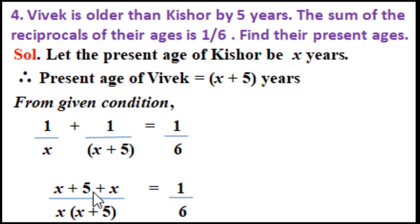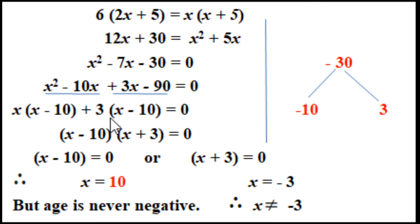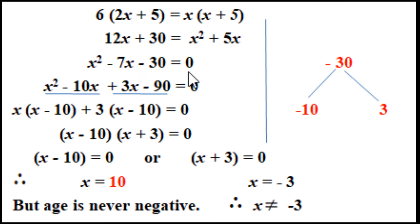By cross multiplying: (x plus 5 plus x) divided by x(x plus 5) equals 1/6, so 6(2x plus 5) equals x(x plus 5). Expanding: 12x plus 30 equals x squared plus 5x. Rearranging: x squared minus 7x minus 30 equals 0. This is the quadratic equation we need to solve by factorization.